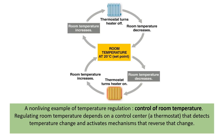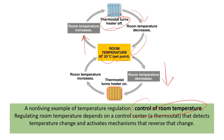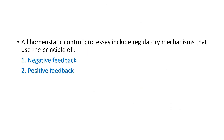An example is the control of room temperature. If the set point is 20°C and the room temperature increases, the thermostat turns the heater off, causing temperature to decrease back to normal. If the room temperature decreases, the thermostat turns the heater on, causing temperature to increase back to normal. All homeostatic control processes include regulatory mechanisms that use the principles of negative feedback and positive feedback.